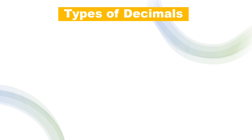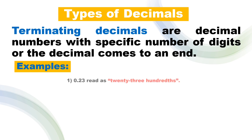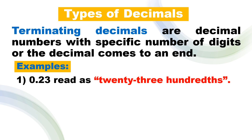How about the types of decimals? First we have terminating decimals. Terminating decimals are decimal numbers with a specific number of digits, or the decimal comes to an end. Example: we have 0.23. We can read this as 23 hundredths, because after the decimal point the place value goes tenths then hundredths.